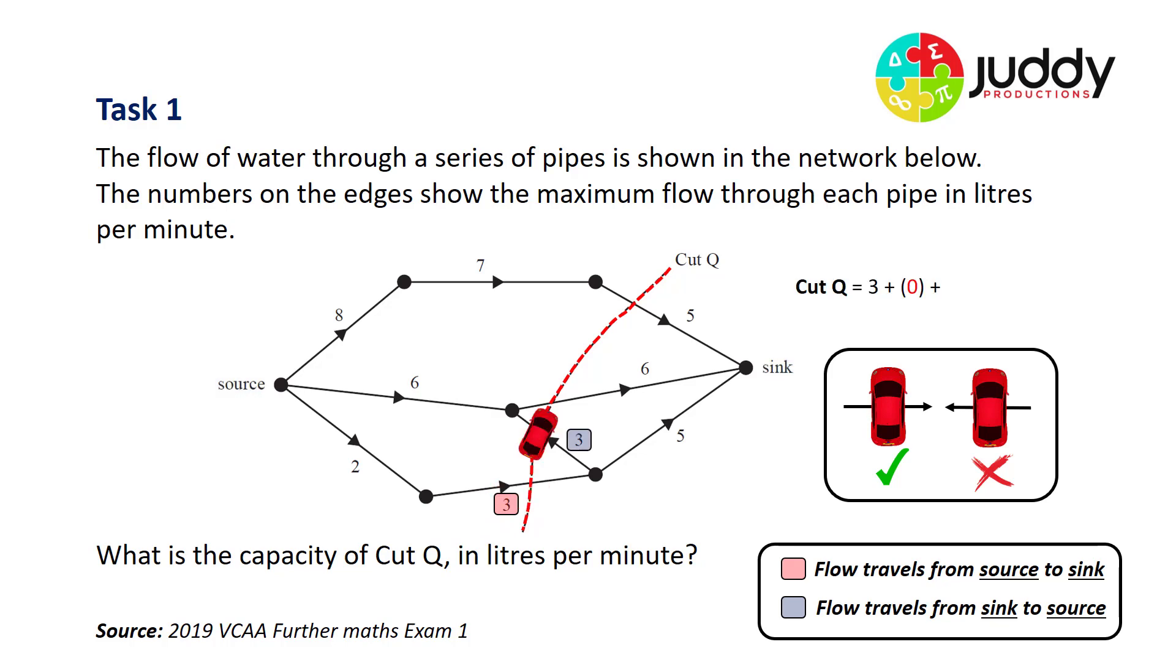We move on to our next edge. In this scenario, the direction of this particular flow is from the driver's side to the passenger. So that particular number three is actually flowing from the sink to the source, moving away from the sink towards the source. So that contributes zero to the capacity of our cut. The next edge has a weighting of six, traveling from the passenger's side through the driver's, so it's included. And finally the five is also included.